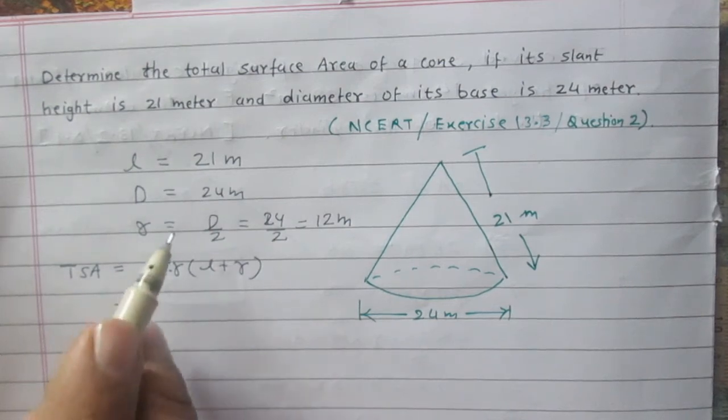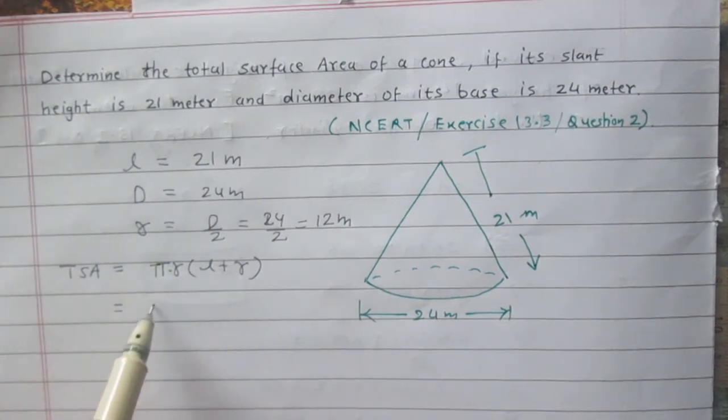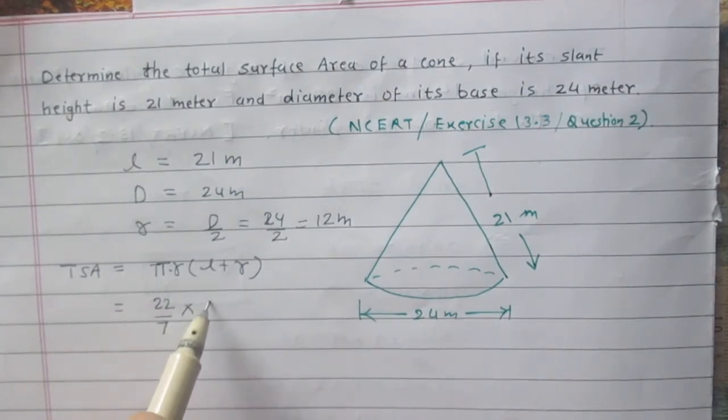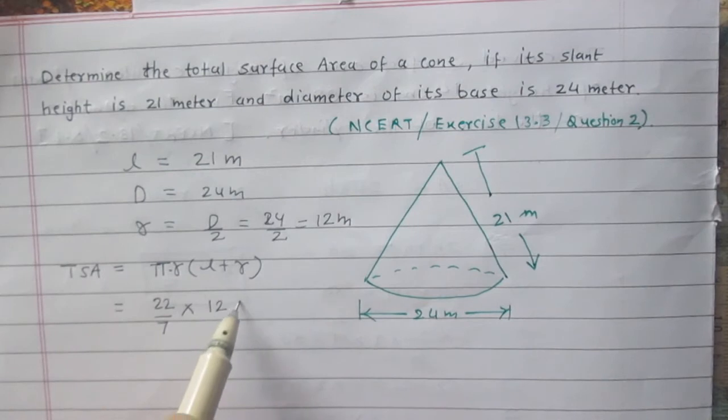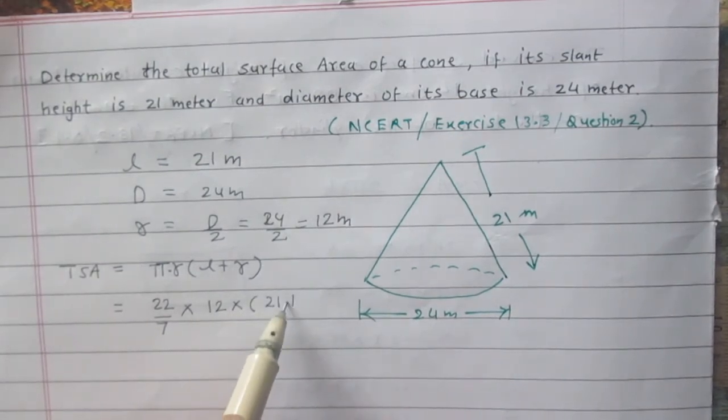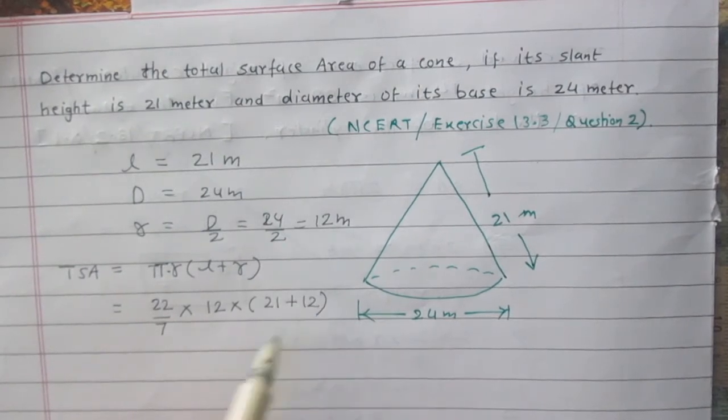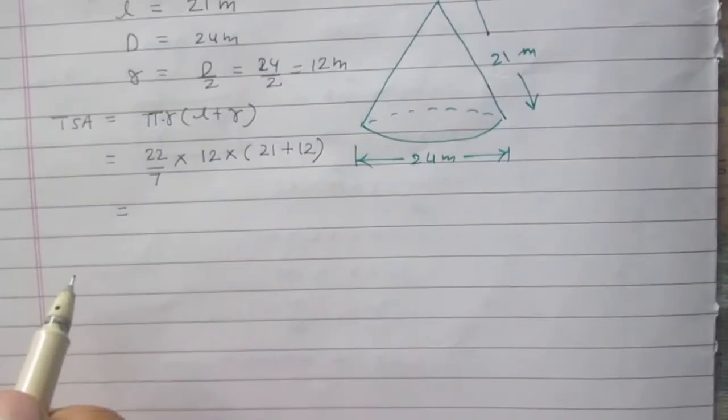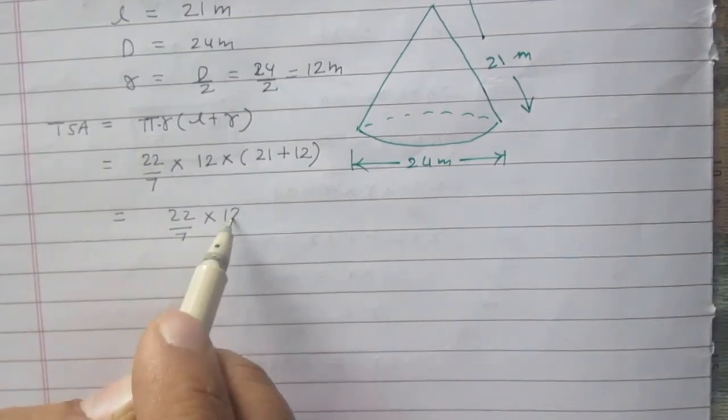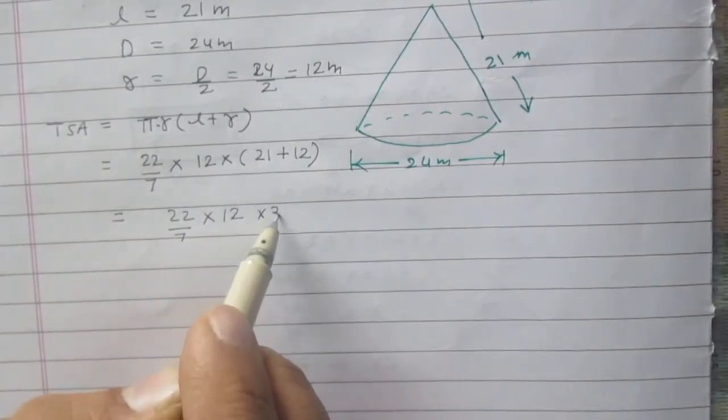After substituting the values here we will get Pi which is 22 by 7, radius R is 12, L the slant height is 21m, and then again radius is 12. We will get 22 by 7 multiplied by 12 multiplied by 33.